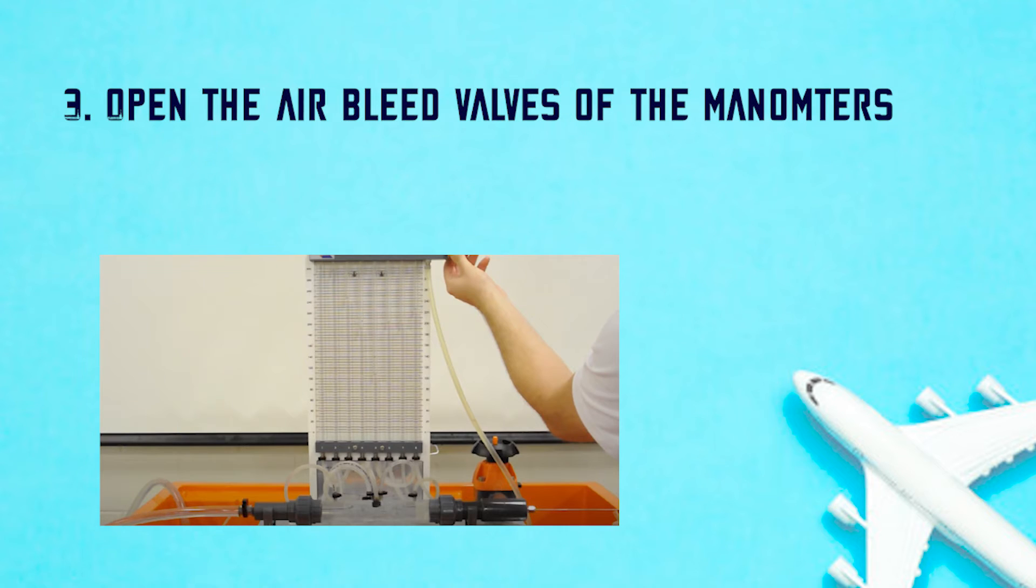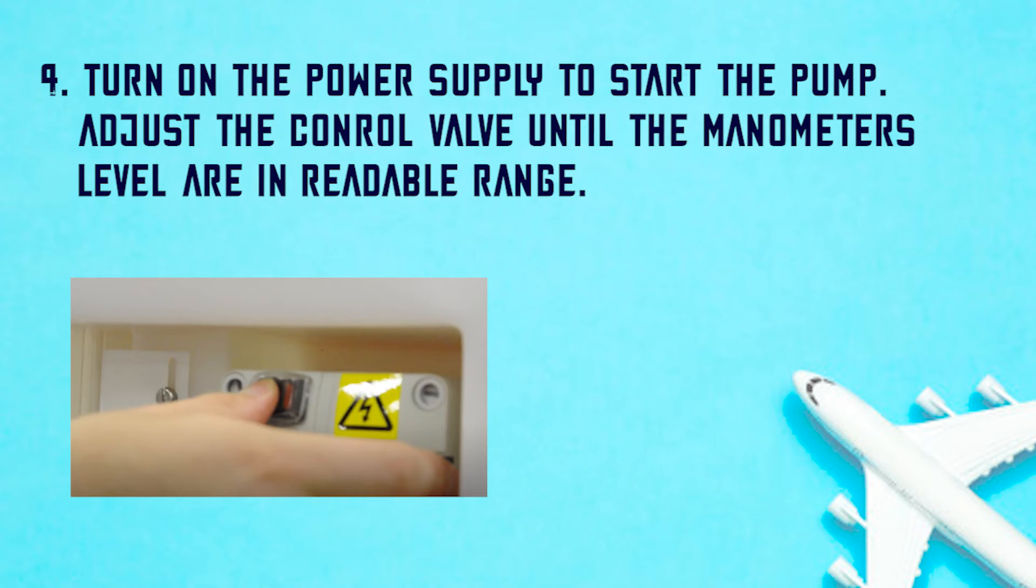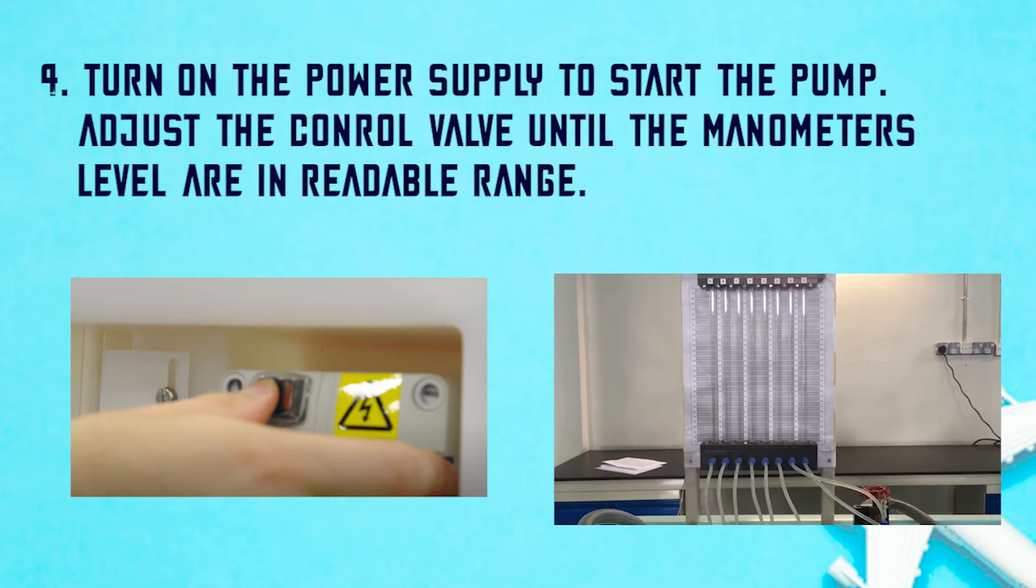Open the air bleed valves of the manometers. Following that, turn on the power supply for the pump to start running and adjust the control valve until the water level in the manometers is at the readable range.